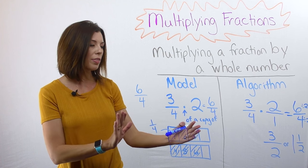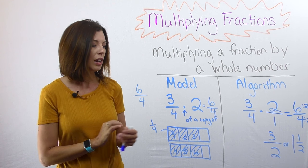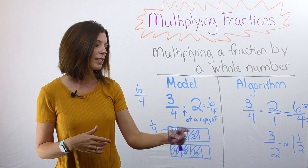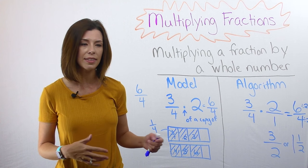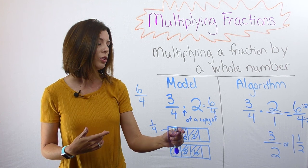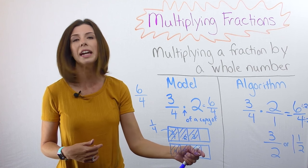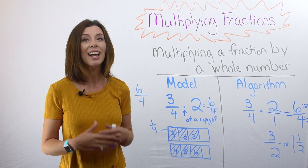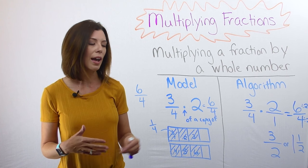Now I want to just make your attention to one thing about our model side here. Sometimes students might think that the answer is six-eighths. Because they're thinking, well, I have one, two, three, four, five, six, seven, eight. And there's six of them shaded. That would be incorrect and here's why.